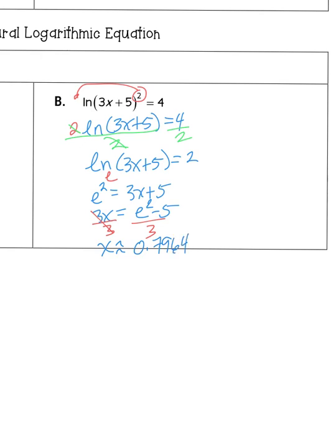I'm going to check a student's work here: e to the second minus 5, divided by 3. That is correct.